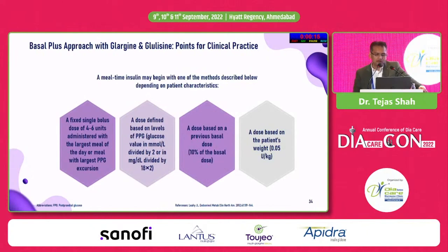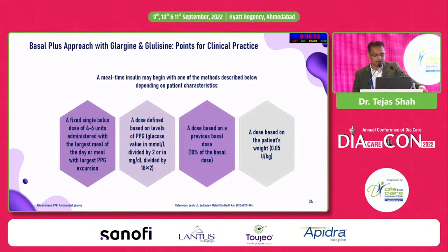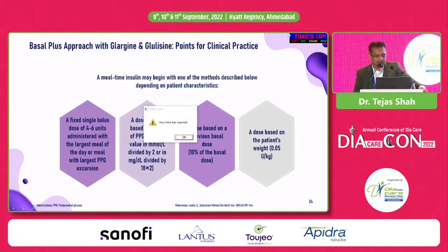Mealtime insulin could be an easier way to start when thinking of intensifying therapy from one insulin to another. A small dose of 4 to 6 units can be started, depending on postprandial blood sugar levels, or a smaller dose of 0.05 to 0.1 units per kg can be started overall.